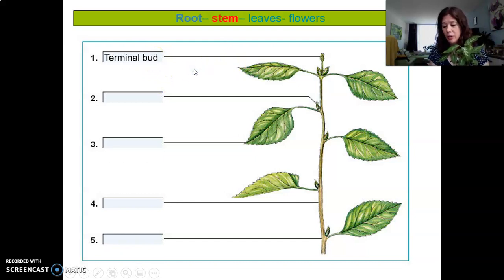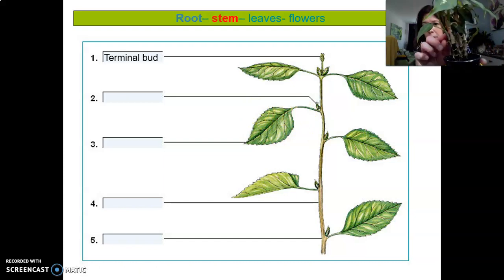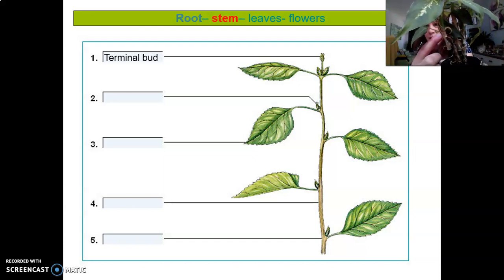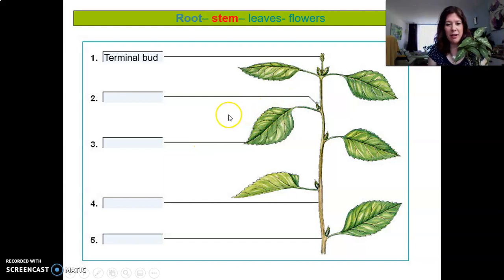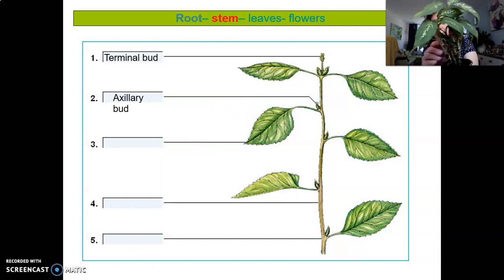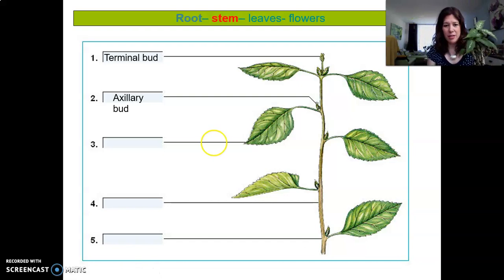The terminal bud is of course the place where the plant grows. It grows new pieces of stem and new leaves. So way up on the plant over here, it's the terminal bud. And then in between, when you have a plant leaf and it's right there, that thing right there is called the auxiliary bud. And the auxiliary bud is right where a leaf is at.